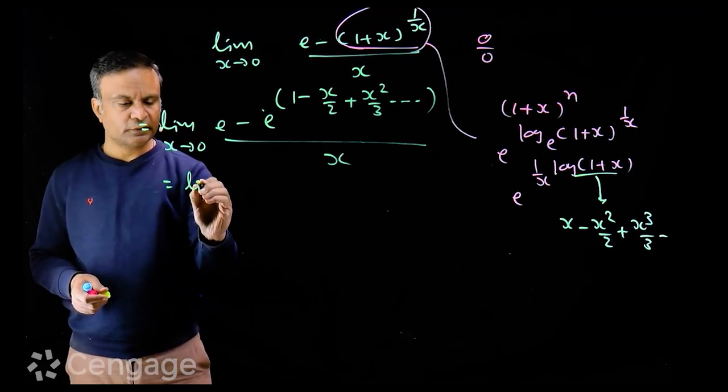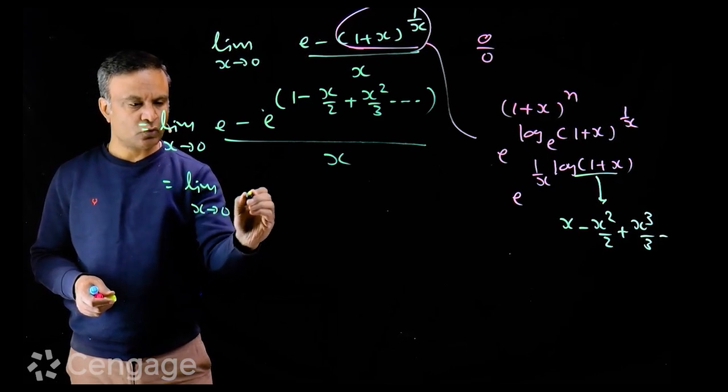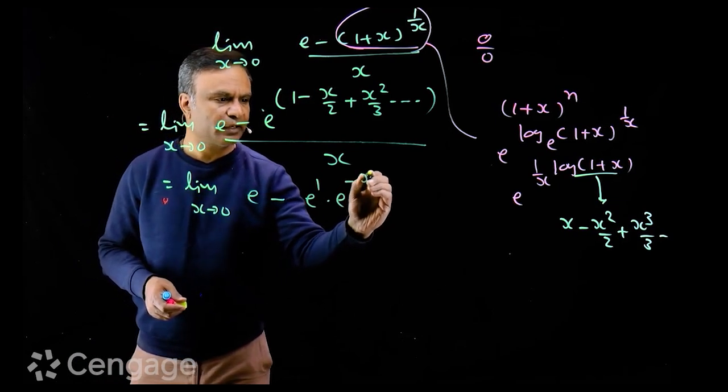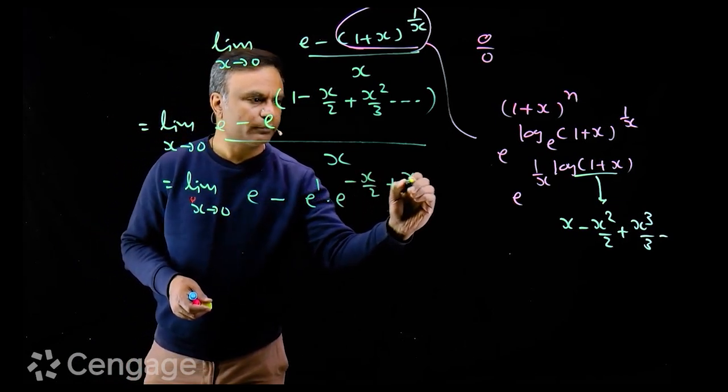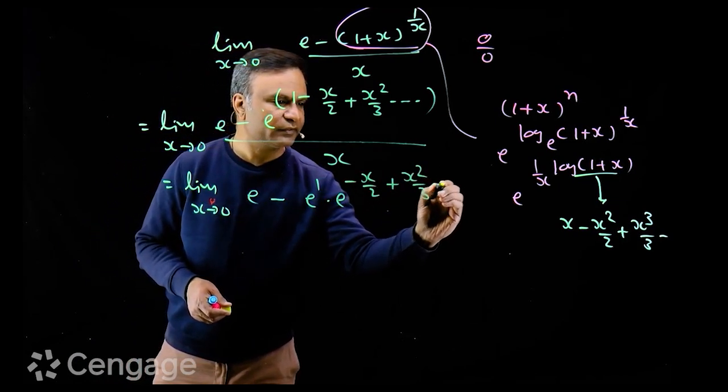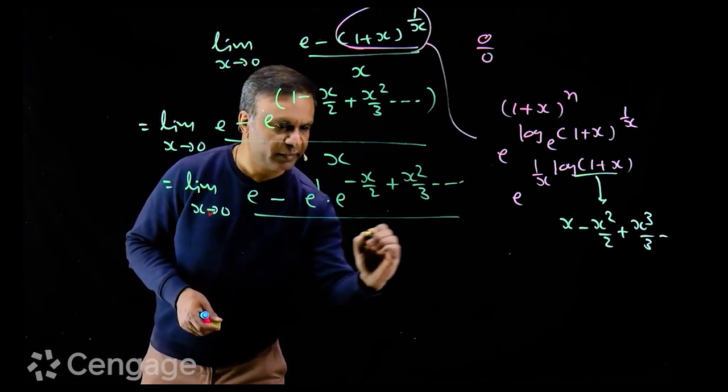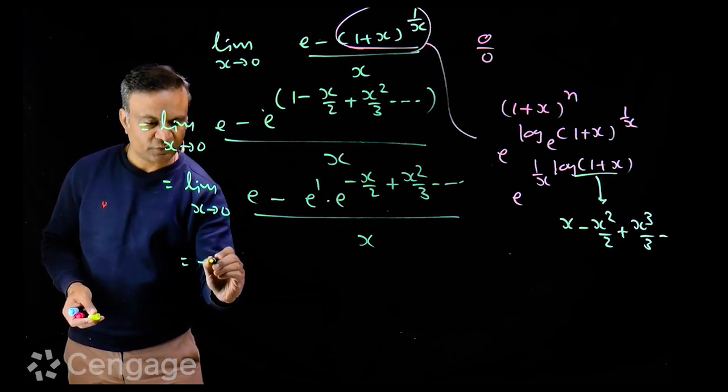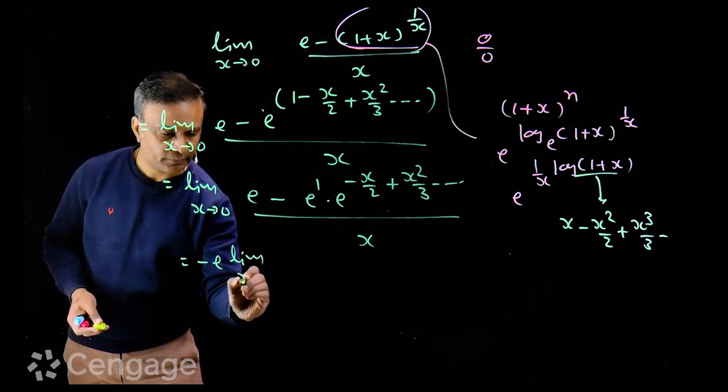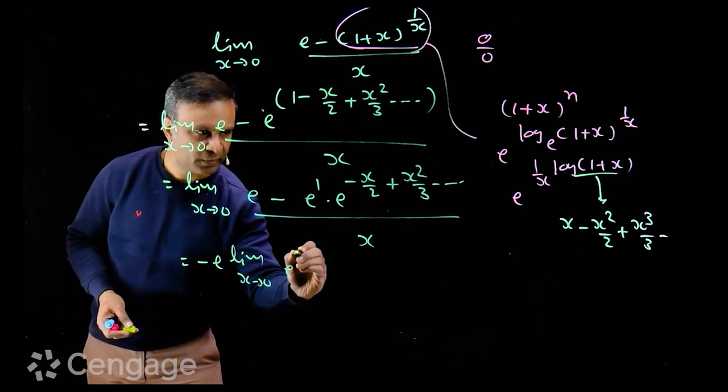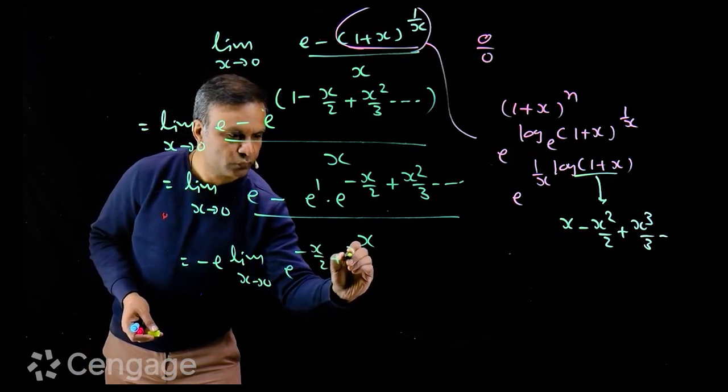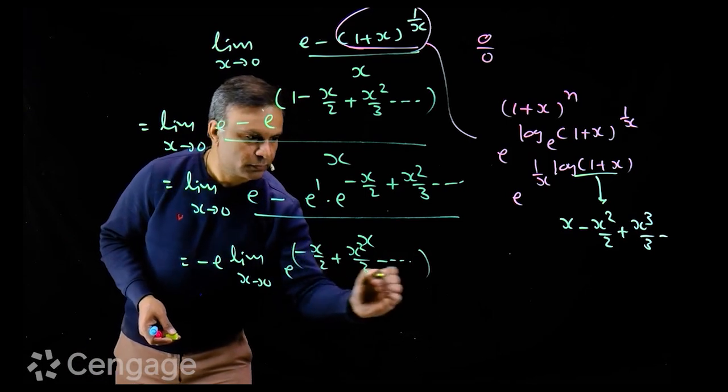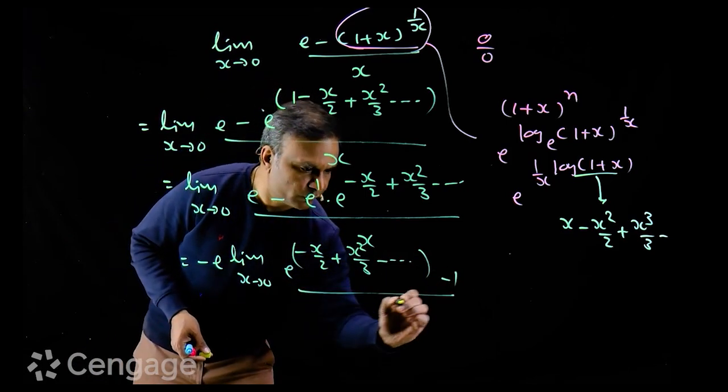Now, this is limit x tends to 0 of e minus e power 1 multiplied by e power minus x by 2 plus x square by 3 and so on. This divided by x. From these two terms, we can take out minus e. So we have minus e multiplied by limit x tends to 0 of e power minus x by 2 plus x square by 3 and so on minus 1 over x.